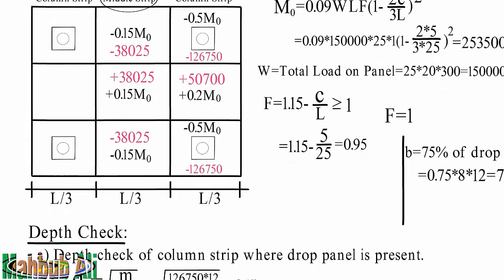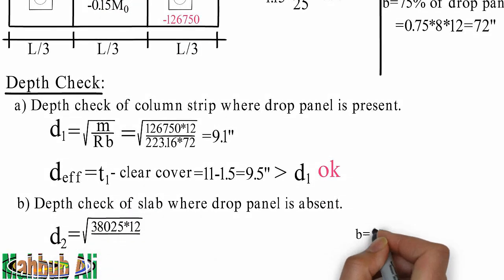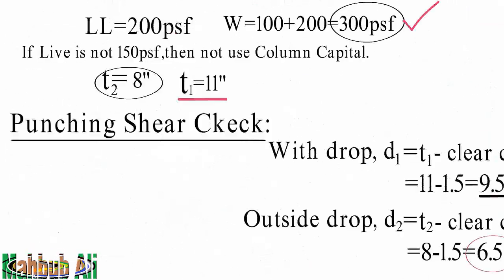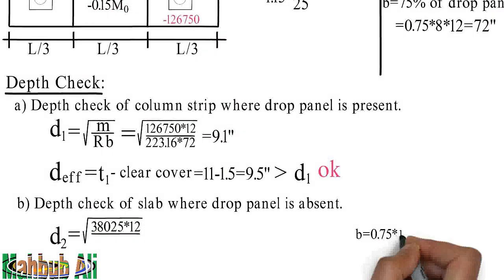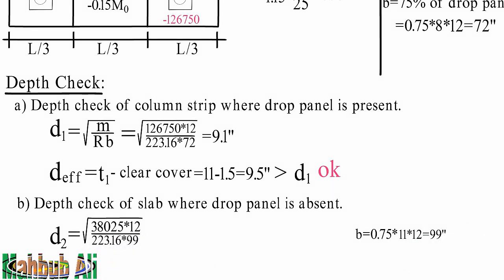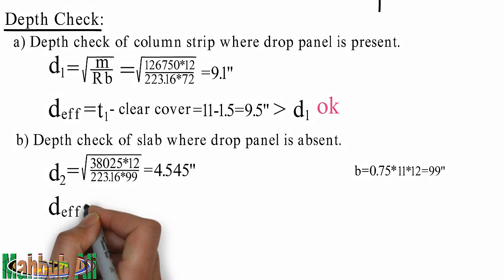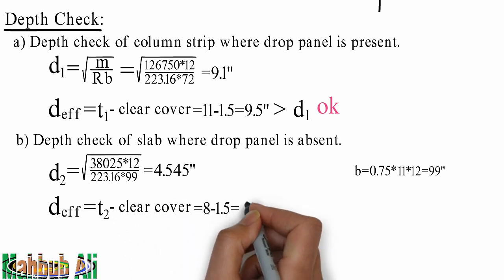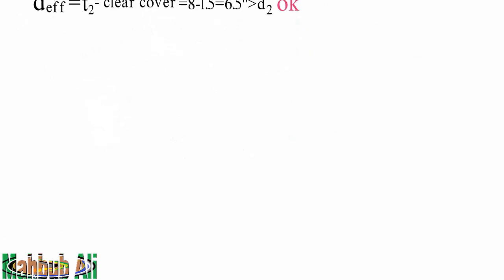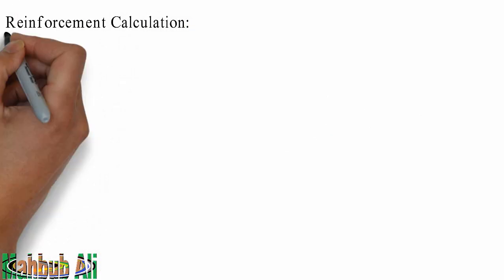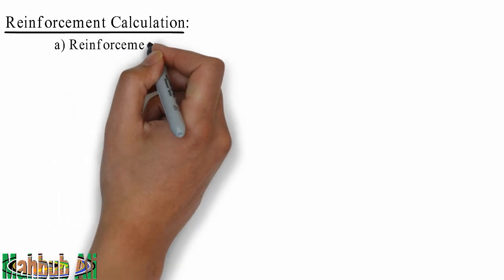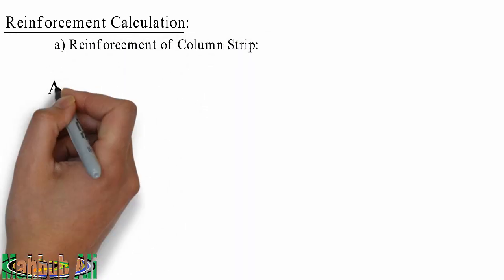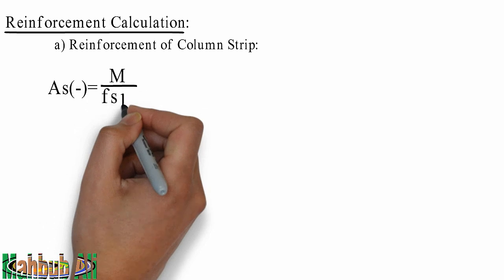Middle strip at tannibow. 4.545 inch. d effective equal d2 beok clear cover. 6.5 inch. Reinforcement calculation — reinforcement of column strip. As negative equal m divided by f z d.